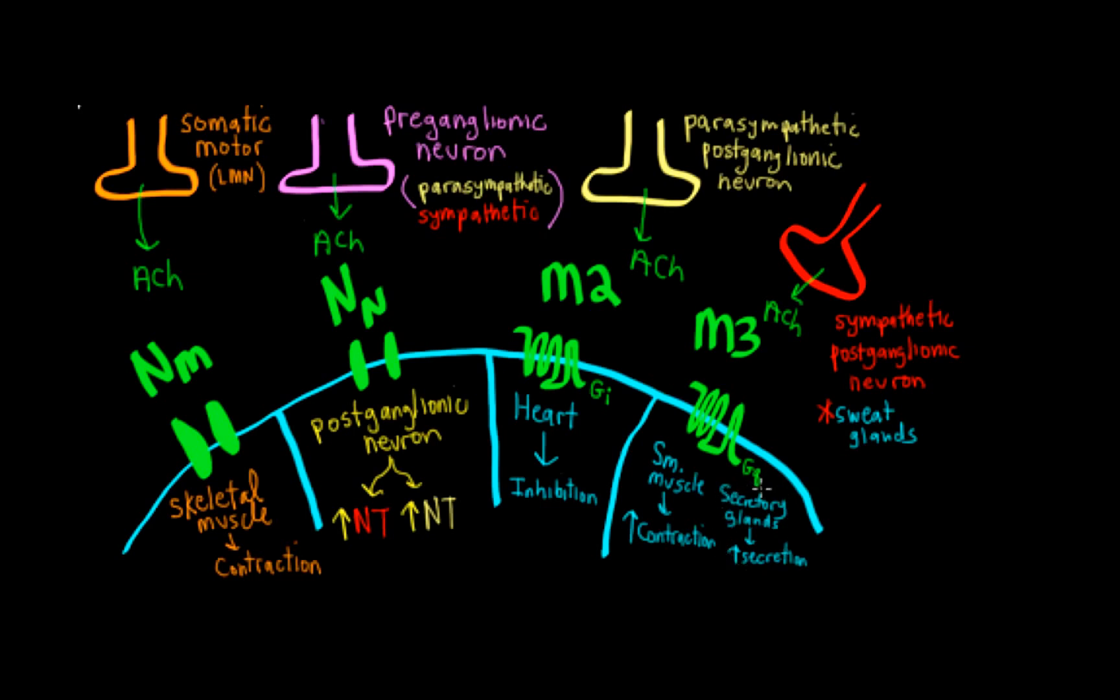Any smooth muscle that's going to contract as a result of parasympathetic input is going to be through an M3 receptor. Any glandular secretion from parasympathetic is going to cause that effect through the M3 receptor. The only effect that's through M2 is on the heart. There's also sympathetic input to sweat glands that's cholinergic, and in this case it's going to be an M3 receptor, which again is coupled to GQ. Increased calcium causes increased sweating.